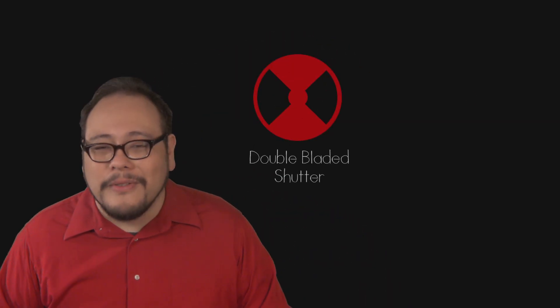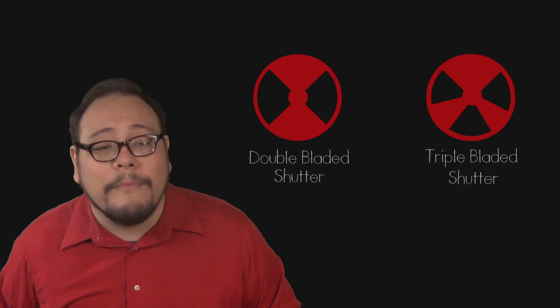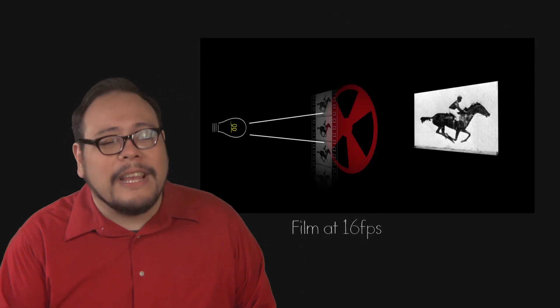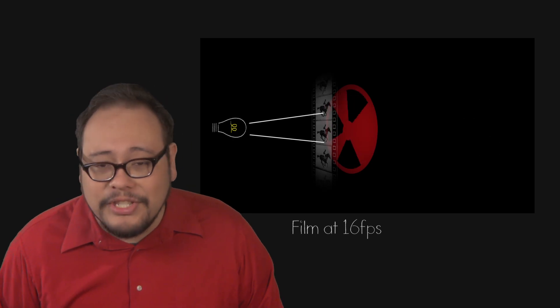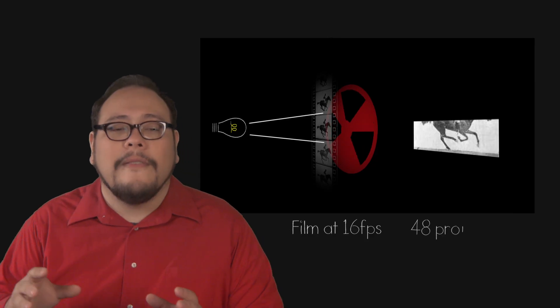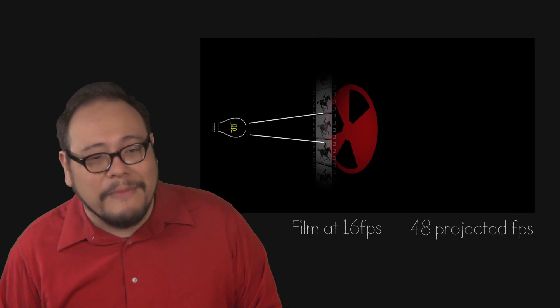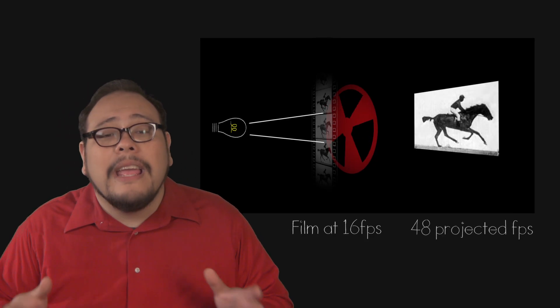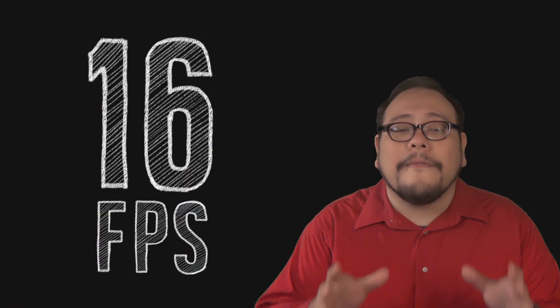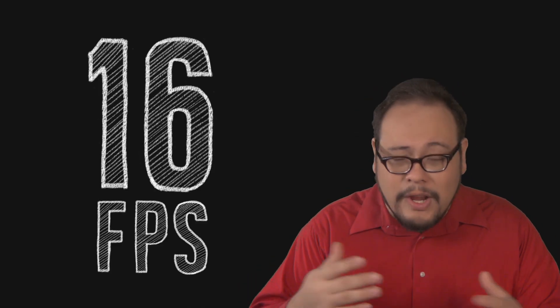Film projectionists came up with a unique solution. Let's flash the same frame on the screen more than once. Using double or triple bladed shutters, you could up the frame rate projected without running more film. Playing back a 16 frames per second film using a triple bladed shutter, we would flash each frame three times for a total of 48 frames per second. Just above Edison's recommendation. And that right there is our first commonly used frame rate for silent film. 16 frames per second. Or thereabouts.